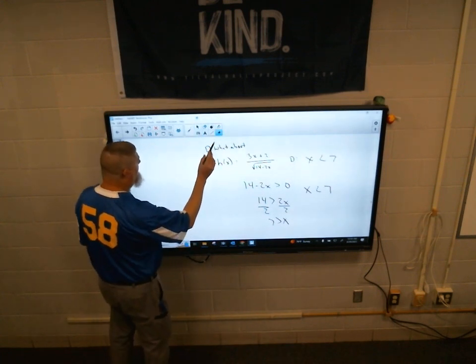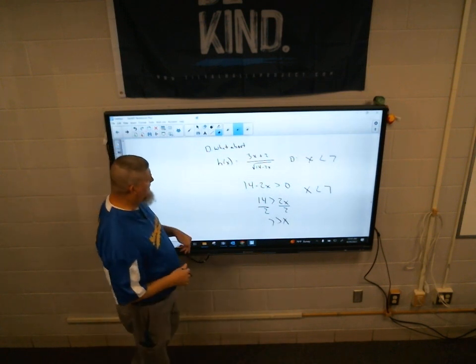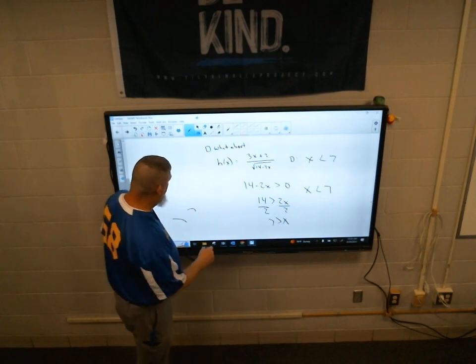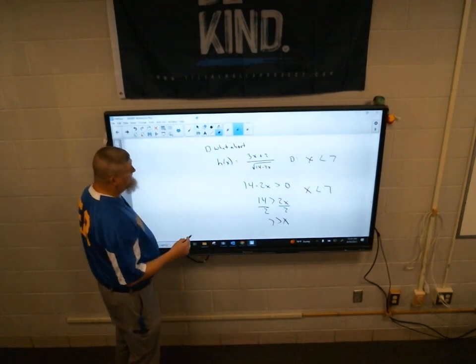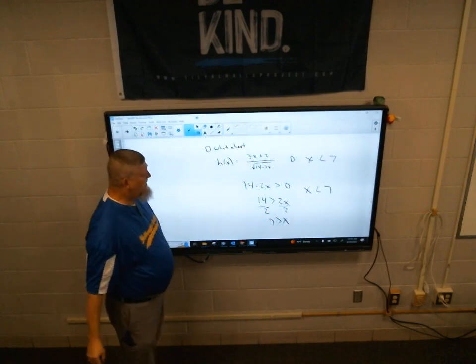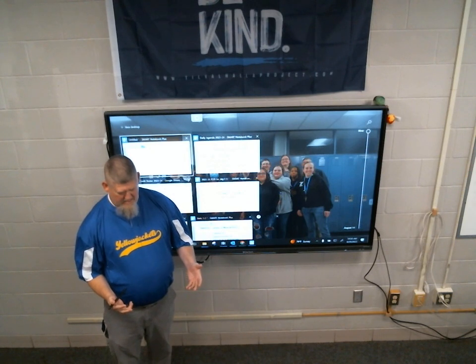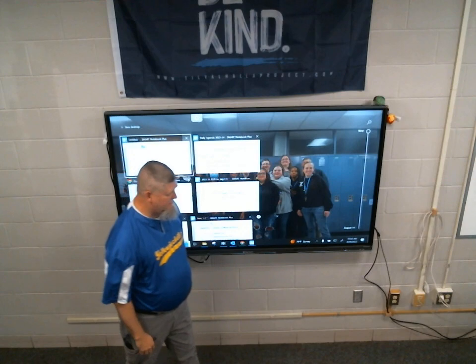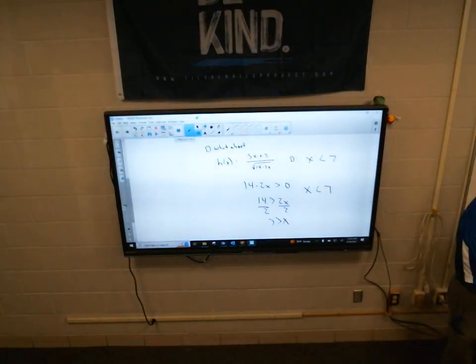So when it comes to these, you kind of have to use that math sense a little bit. What are the restrictions? Denominator can't be zero, the square root cannot be negative. You just kind of put those two ideas together. Does that kind of make sense? Kind of? Sort of maybe? A little still fuzzy?